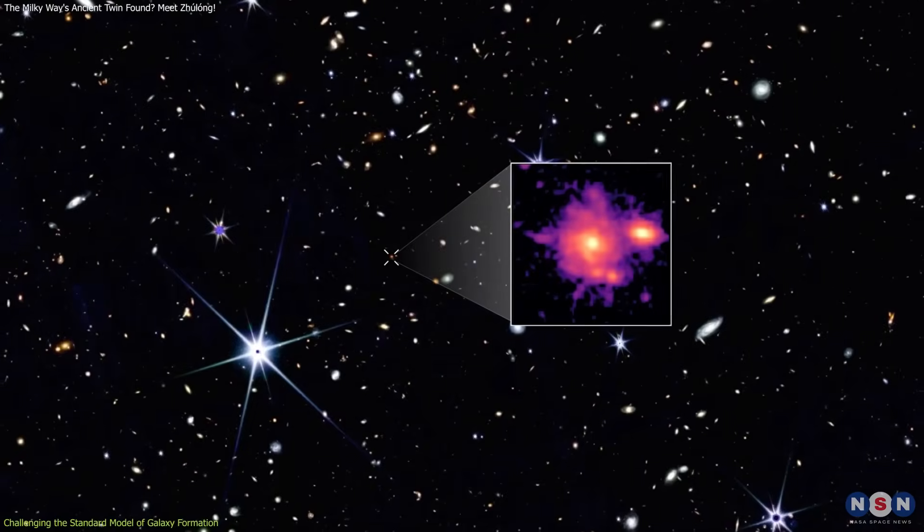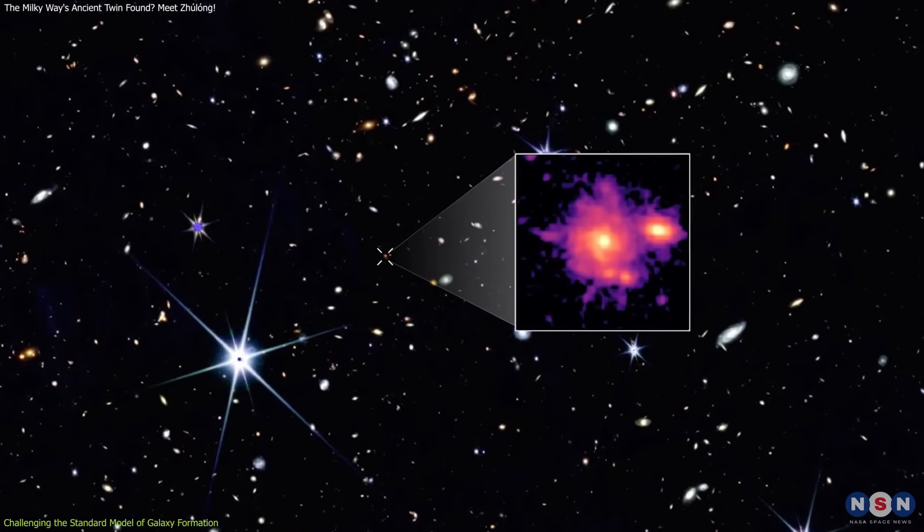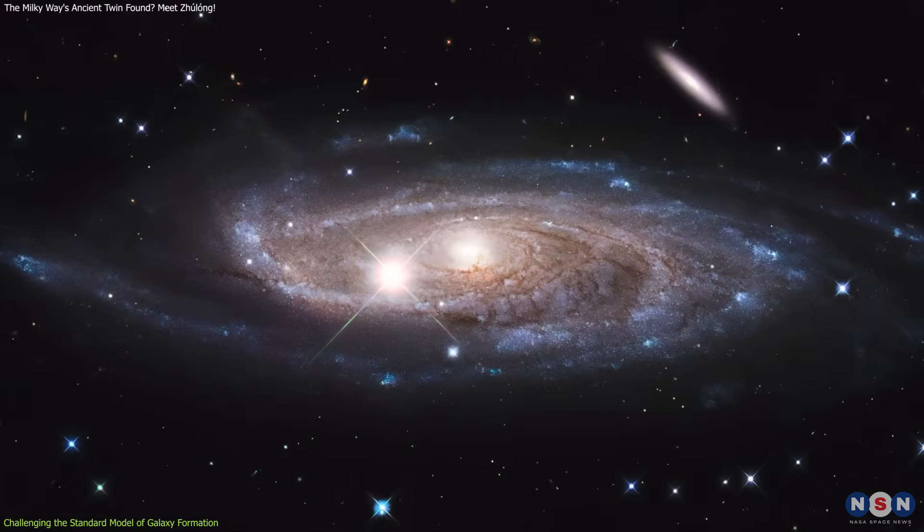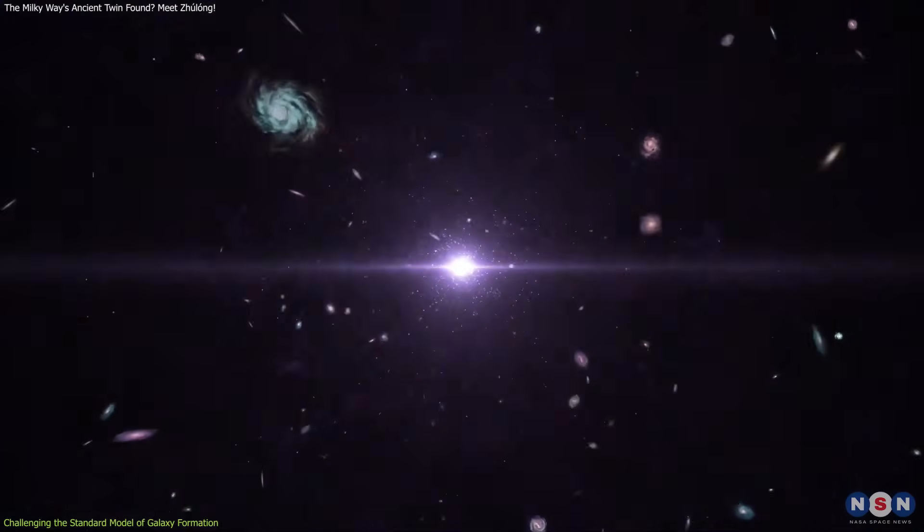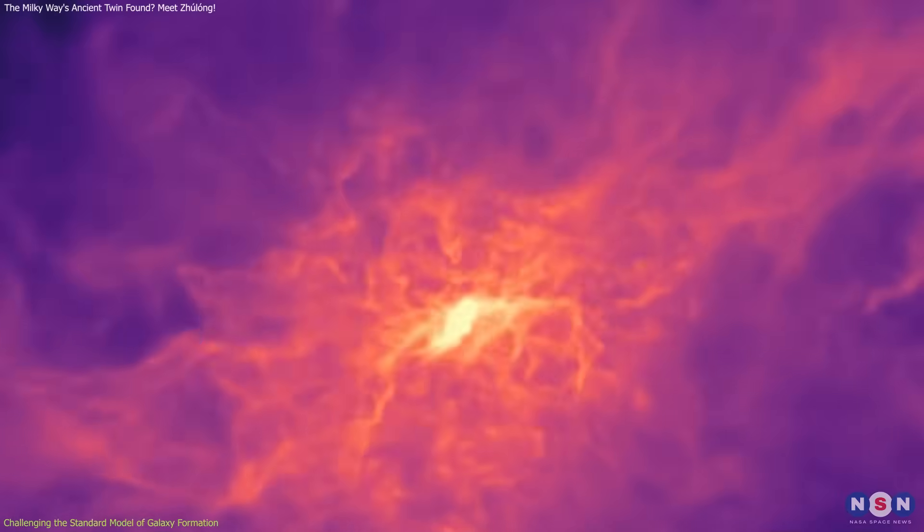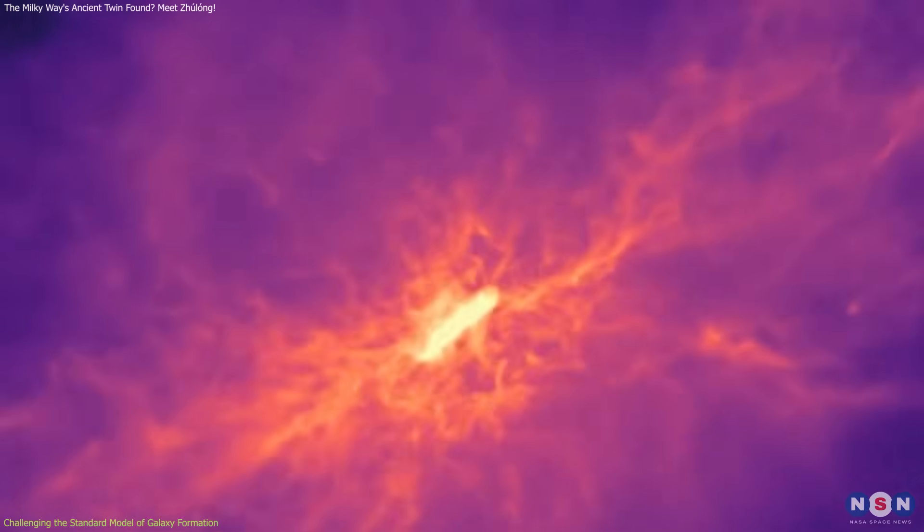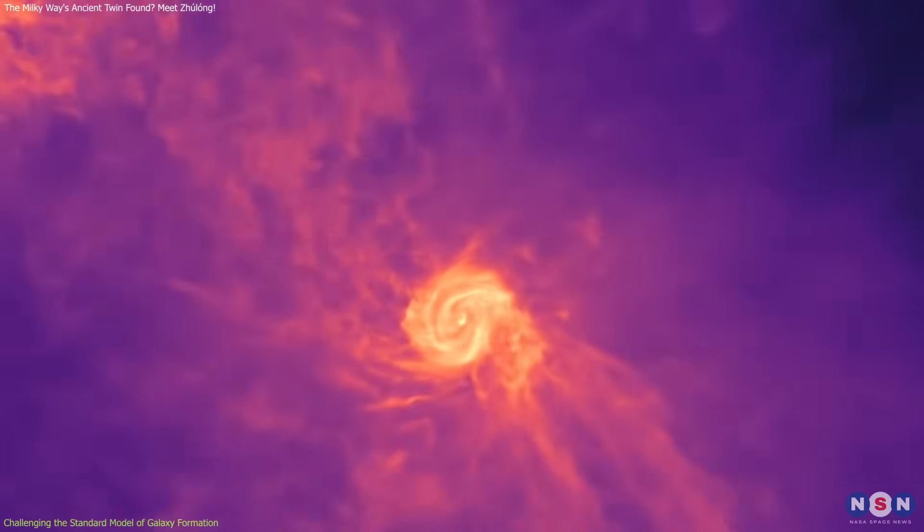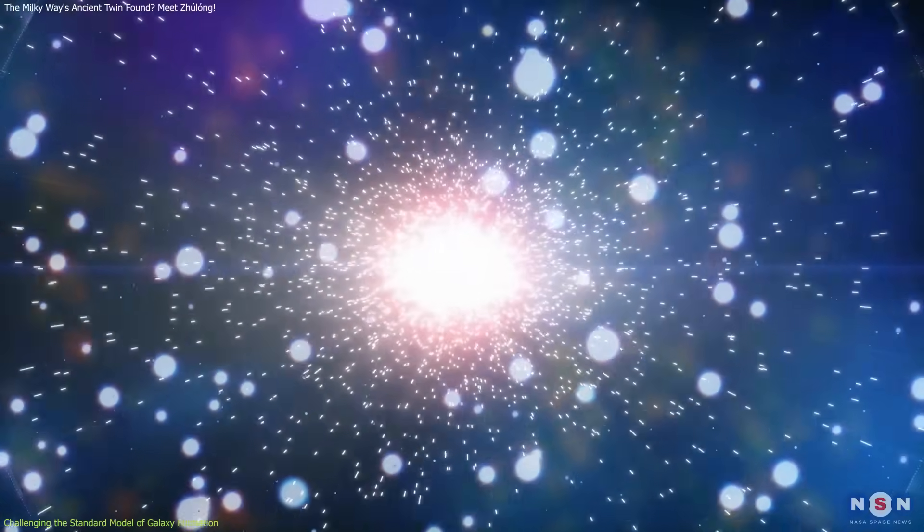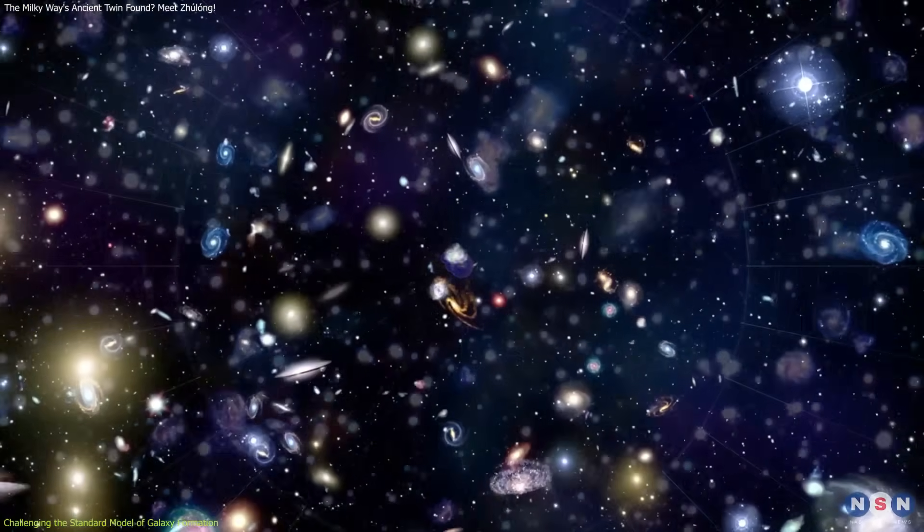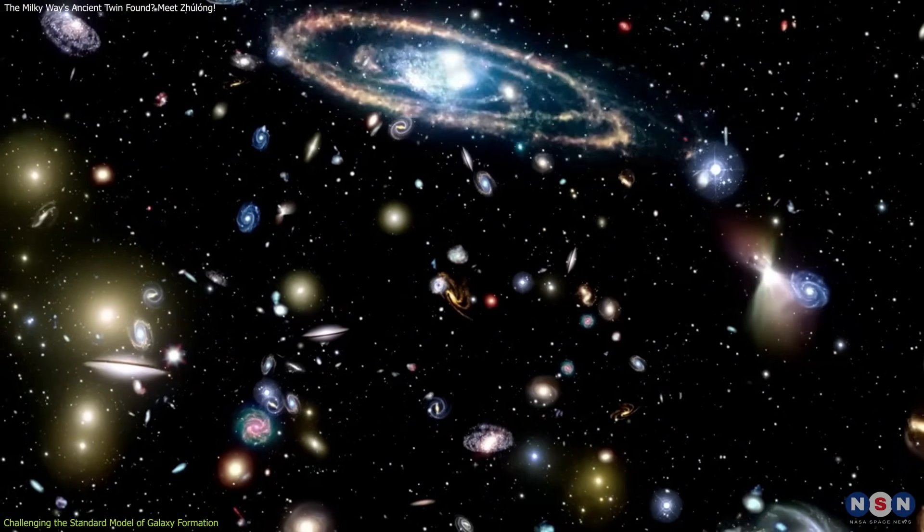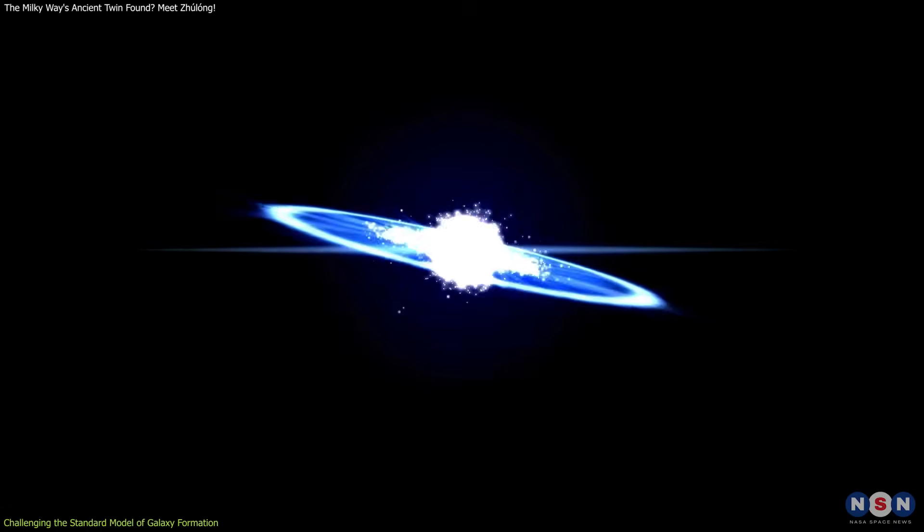However, the discovery of Zhulong is forcing scientists to rethink that entire timeline. If a galaxy like this, so big and well-organized, could form just a billion years after the Big Bang, it suggests that the processes behind galaxy building might be much faster and much more efficient than anyone expected. Massive, orderly galaxies may have started appearing not billions of years later, but surprisingly early, right out of the cosmic dark ages.